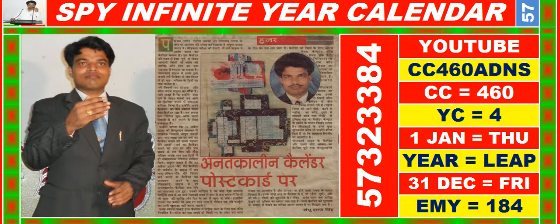Good morning, dear friends. You are heartily welcome in Master Key of Success. In this video you are watching SPY Infinite Year Calendar for the year having calendar code equal to 4-6-0, and you may also search it on YouTube by CC 4-6-0-ADNS.